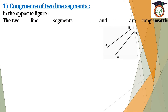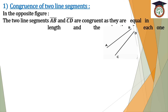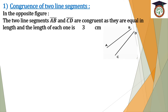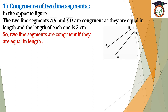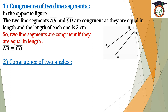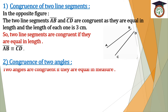The two line segments AB and CD are congruent as they are equal in length, and the length of each one is three centimeters. So our two line segments are congruent if they are equal in length.